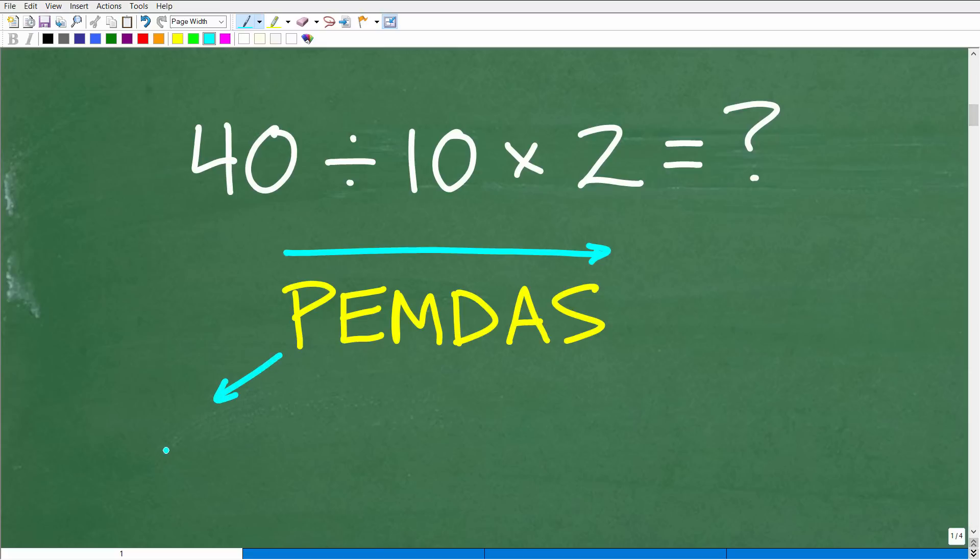All right. So the P stands for parentheses. Okay. So if you see things in parentheses or brackets or even these kind of little squiggly brackets like this, these are technically what we call grouping symbols.